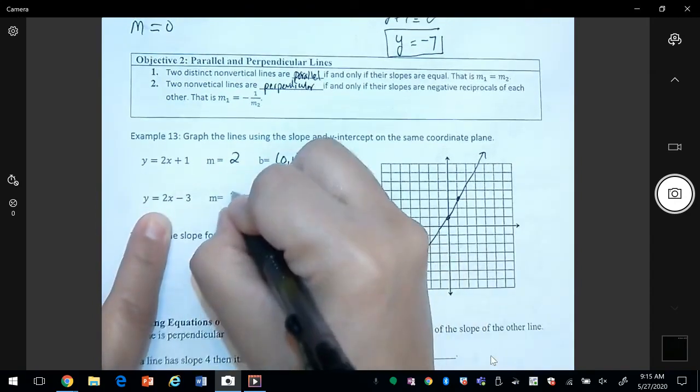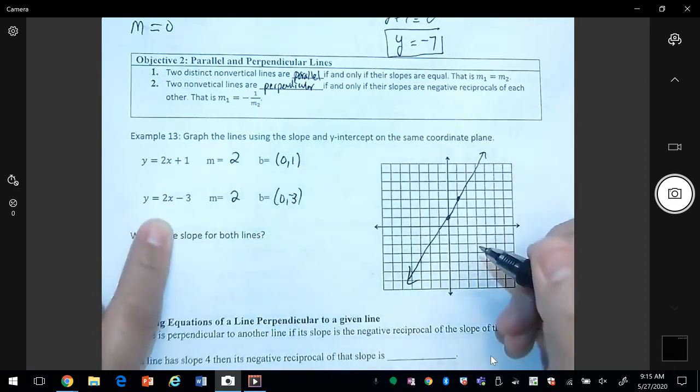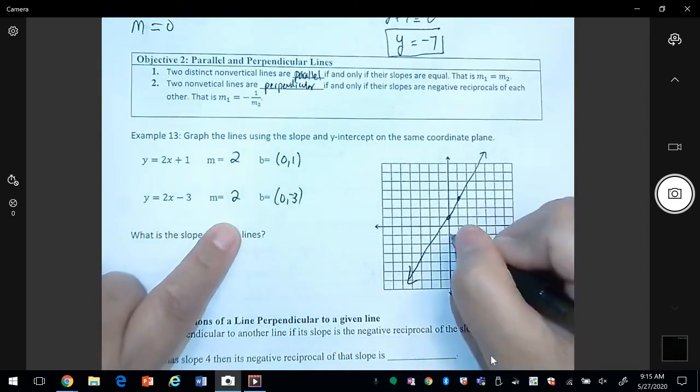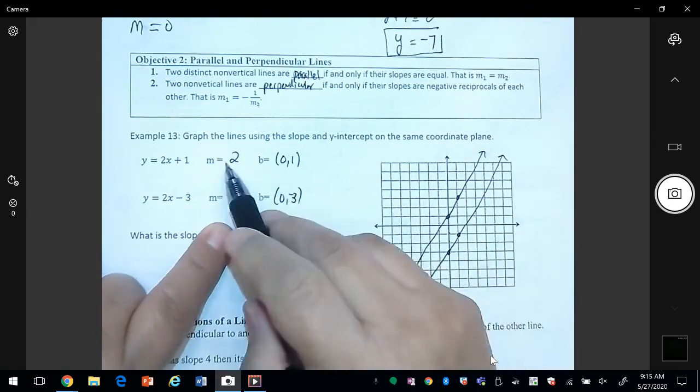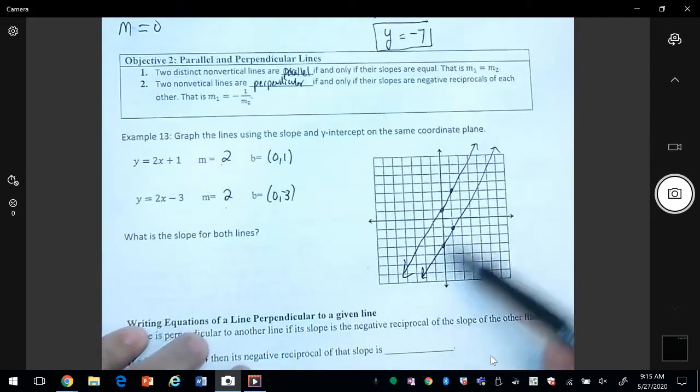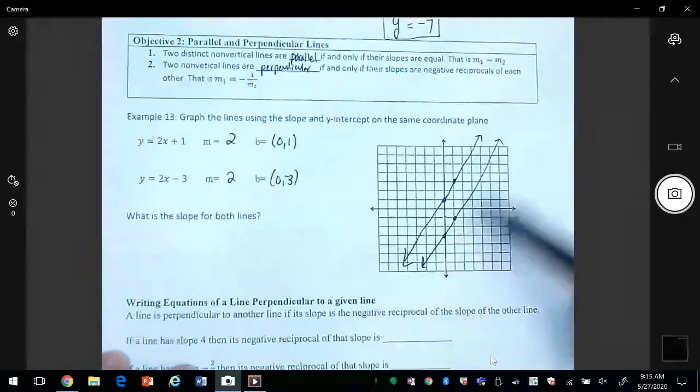And then this one is two and zero negative three. So we go up two over one. So as you can see, these lines have the same slope, and when you graph it they're not going to intersect each other. They're actually called parallel lines.